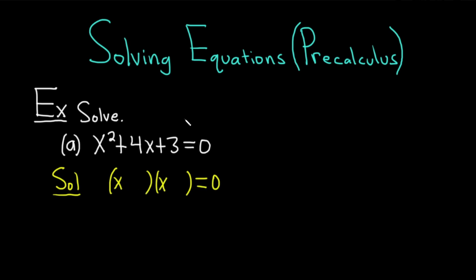Then we need two numbers that multiply to 3 but add to the middle number, 4. In this case, it's really simple. You just use plus 1 and plus 3. And you can check: x times x is x squared, 1 times 3 is 3, and then 1 plus 3 is 4.